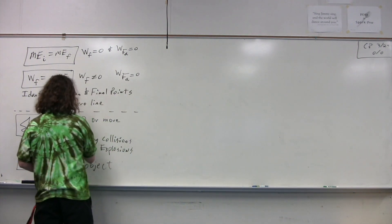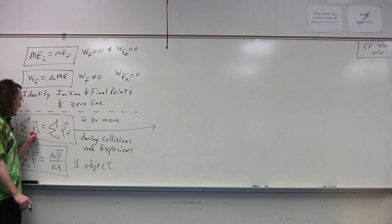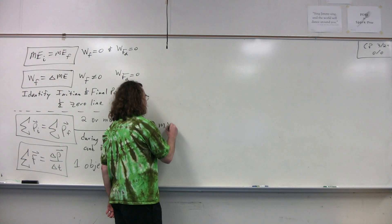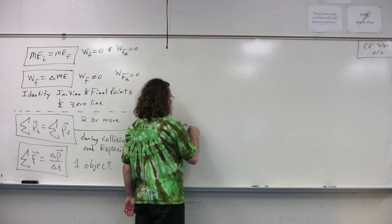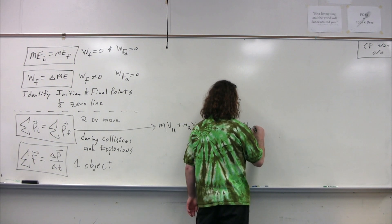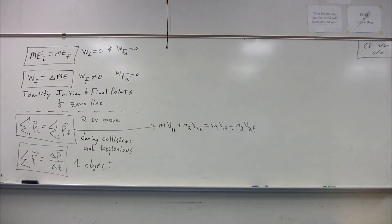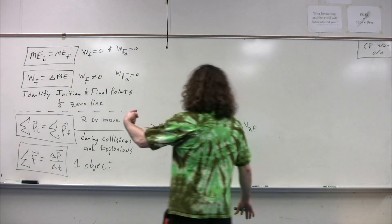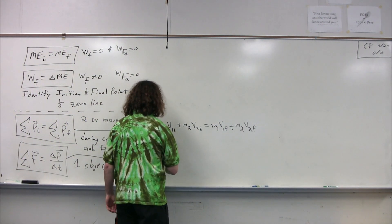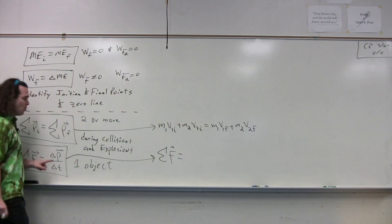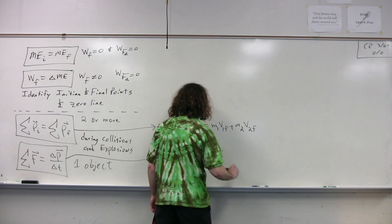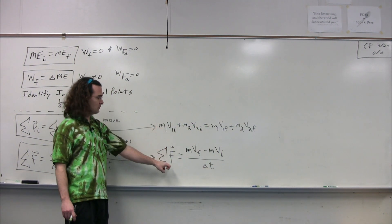Please make sure that whenever you use these equations you expand them. For conservation of momentum: m₁v₁ᵢ + m₂v₂ᵢ = m₁v₁f + m₂v₂f. For net force equals change in momentum: F_net = (mv_f − mv_i) / Δt. You can see this applies to a single object, whereas conservation of momentum involves more than one object.